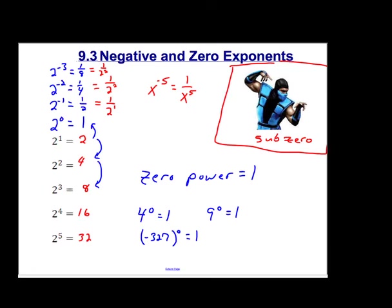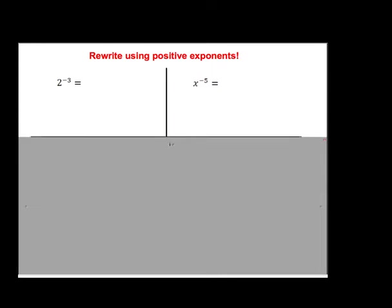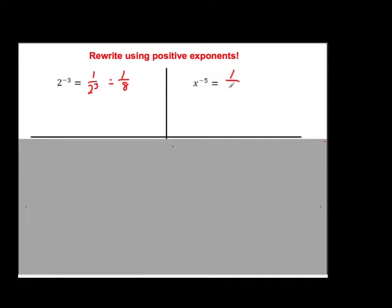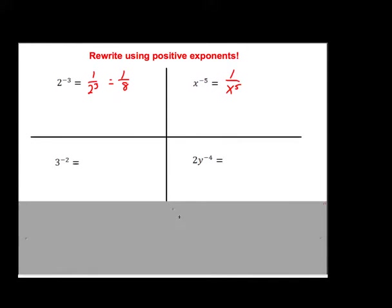So who knew Sub-Zero was really a math character that whole time in Mortal Kombat! Let's rewrite these using only positive exponents. 2 to the negative third means 1 over 2 to the third power. If you want to multiply that out, 2 to the third is 2 times 2 times 2, so that's 1 over 8. And x to the negative 5 would be 1 over x to the fifth.